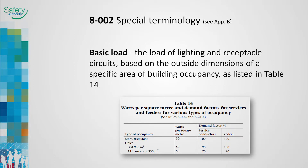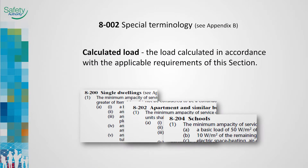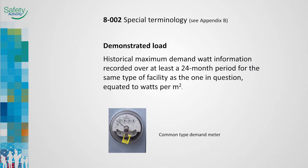Rule 8-002, Special Terminology, introduces three common terms and provides definitions, with further information provided in the Appendix B notes. The basic load may be considered to be the minimum typical lighting and receptacle load found within a building based on its outside dimensions and the type of occupancy. The basic load does not include equipment such as special lighting or other power and electric space heating loads. The calculated load is defined as the load determined using the relevant rules of Section 8. These load and demand factors are based on generally accepted assumptions and engineering analysis as well as load data and experience obtained from similar occupancies. The demonstrated load is defined as the load obtained from one type of occupancy over a relatively long period of time that can be used to determine the load requirements for occupancies of a similar type and style.